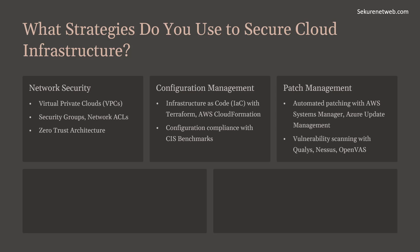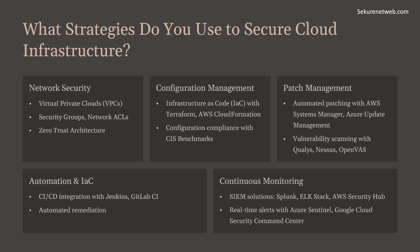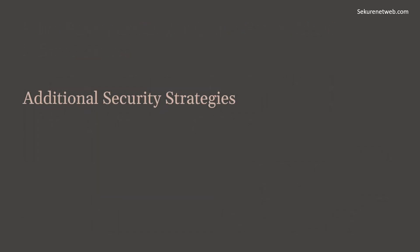Use Azure Update Management to ensure systems are up to date. Regularly scan for vulnerabilities with tools like Qualys, Nessus, or OpenVAS and apply patches promptly. Integrate security checks into CI/CD pipelines using tools like Jenkins, GitLab CI, or AWS CodePipeline. Use SIEM solutions like Splunk, ELK Stack, or AWS Security Hub to aggregate and analyze security logs in real time, and configure real-time alerts for suspicious activities such as unauthorized access attempts or data exfiltration using services like Azure Sentinel or Google Cloud Security Command Center.